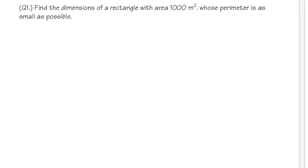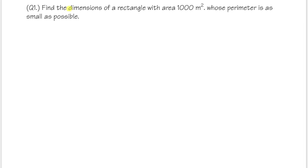Number one: we are going to find the dimensions of a rectangle whose area is 1000 meters squared, and we want the perimeter to be as small as possible. I want to show you two super powerful words for solving word problems. The first word is 'Know' — we write down what we know and draw pictures to illustrate the situation. Here we are talking about a rectangle, so let's draw one.